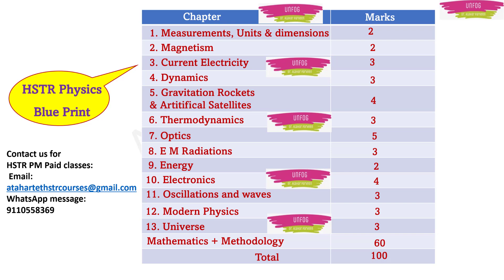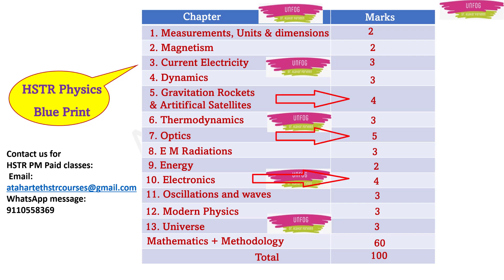Now the blueprint is ready. If you observe carefully, the most important chapters from a marks perspective are: gravitation, rockets and artificial satellites (4 questions), optics (5 questions), and electronics (4 questions). If you master just these three chapters, you can score 13 marks. Each mark is very, very important in the HSTR exam because within one mark you may lose or get the job, so you cannot afford to take any risks.